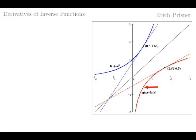Remember that since both functions are inverse to each other, the graph of each one can be obtained from the graph of the other by reflecting it about the straight line y equals x, which is drawn in black. Note also that reflecting about this straight line means interchanging the x and the y coordinate. The inverse function exchanges x and y — input and output. If f of 0.5 equals 1.66, then g of 1.66 equals 0.5.